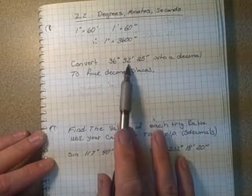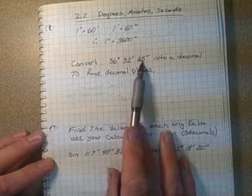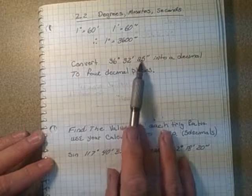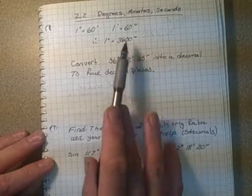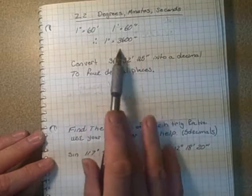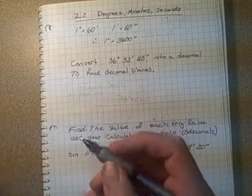You put 32 over the 60 and you put the 25 over the 3600. Remember that when you do seconds, you're wanting to convert it into degrees. So because you're converting into degrees you have to use this value here.